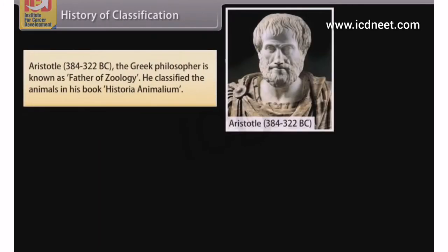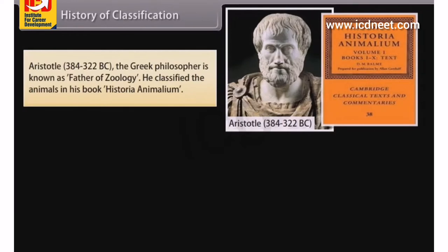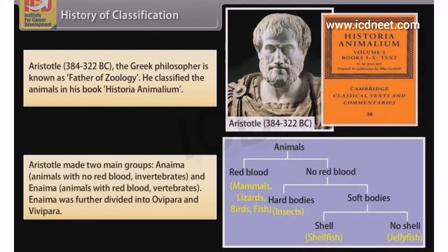Aristotle (384–322 B.C.), the Greek philosopher, is known as the father of zoology. He classified animals in his book Historia Animalium. Aristotle made two main groups: Anima, animals with no red blood (invertebrates), and Anima, animals with red blood (vertebrates). Anima was further divided into ovipara and vivipara.